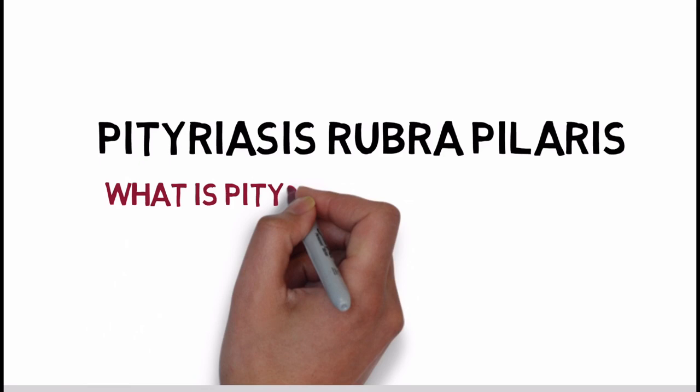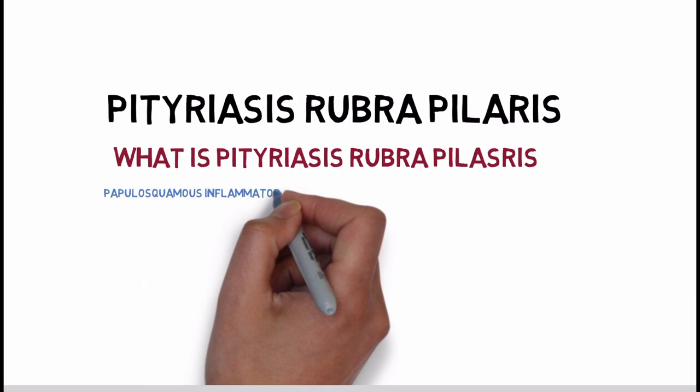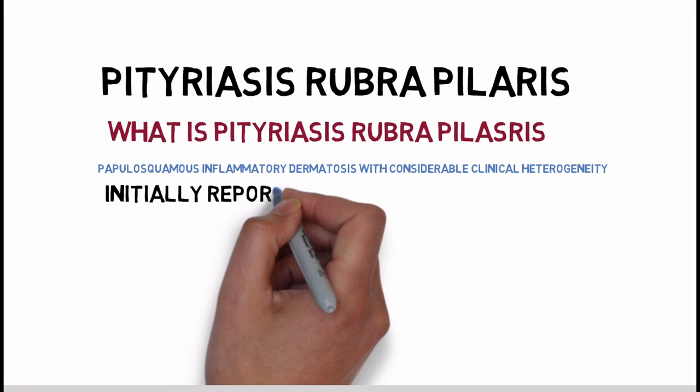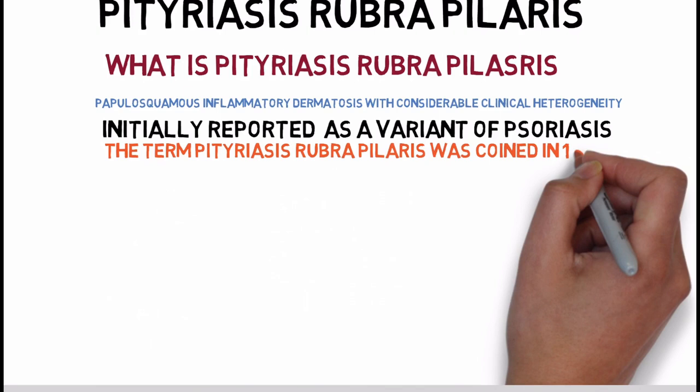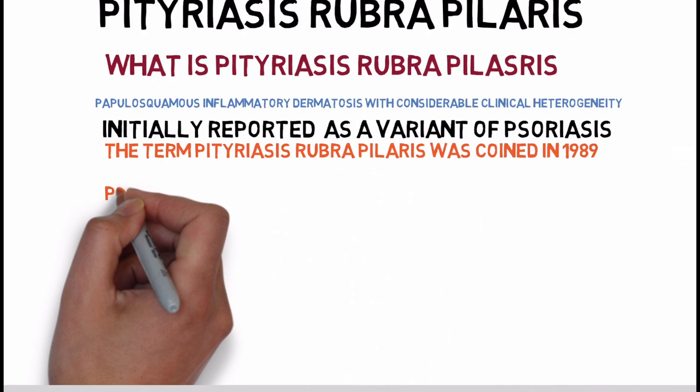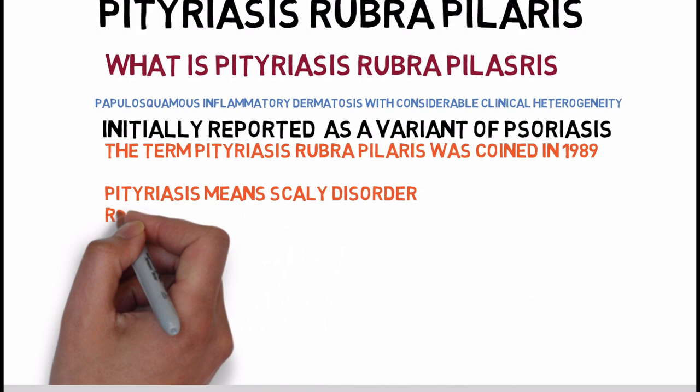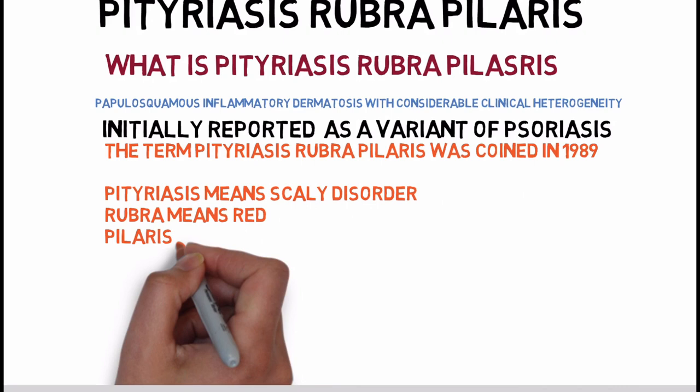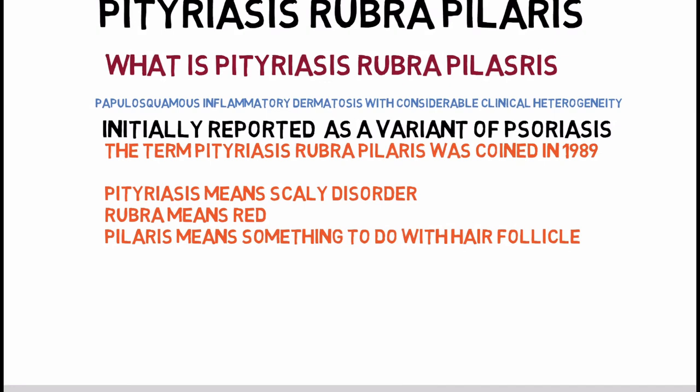What is Pityriasis Rubra Pilaris? It is a rare papulosquamous inflammatory dermatosis of unknown origin and considerable heterogeneity. Pityriasis Rubra Pilaris was considered a variant of psoriasis; it was in 1889 that the term was coined and remains the accepted terminology. The word pityriasis means any skin disorder characterized by shedding of dry flakes of skin, rubra means red, and pilaris means something to do with the hair follicles.